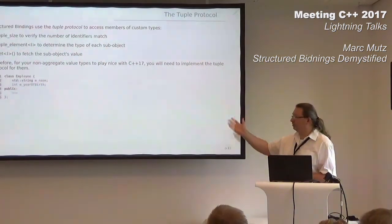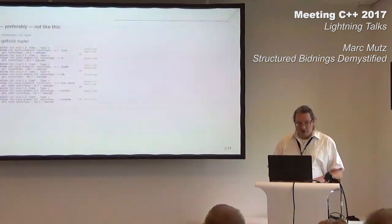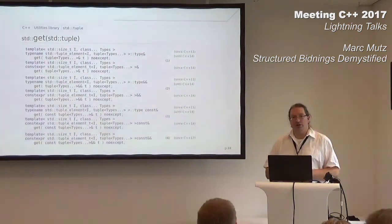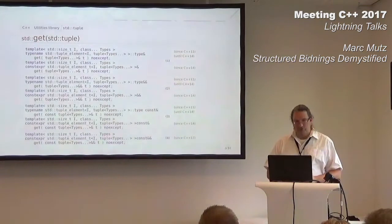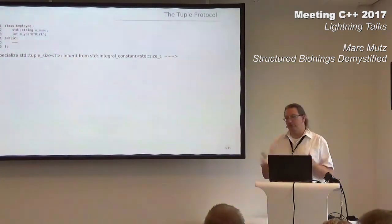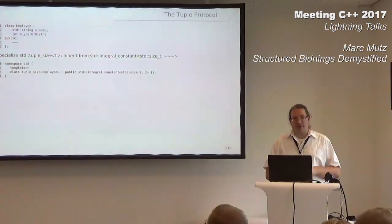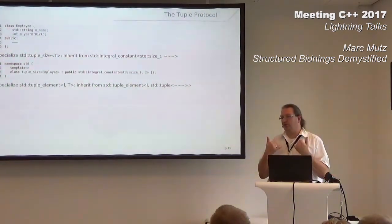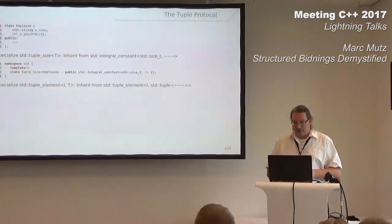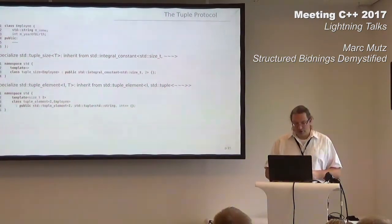Let's take a next Employee class. For our purposes it suffices to have two members: a name and a year of birth, and we want to implement the tuple protocol for it — preferably without lots of template metaprogramming overloads. Most of the time there's something easier. First, specialize tuple_size — simply inherit from integral_constant. Second, tuple_element: rather than specializing based on the integer index and writing 'using type = std::string' / 'using type = int', you can just reuse tuple_element for a tuple directly.